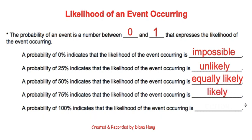And last but not least, if an event has a 100% probability of occurring, then we call that certain.